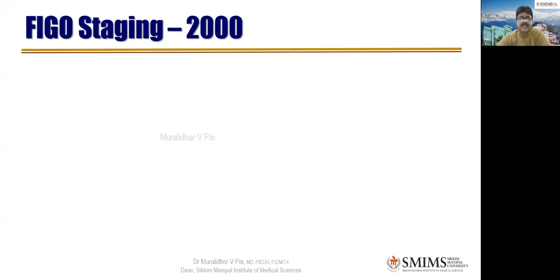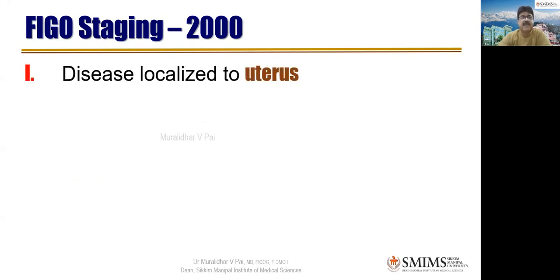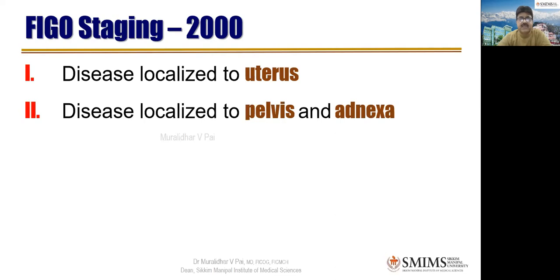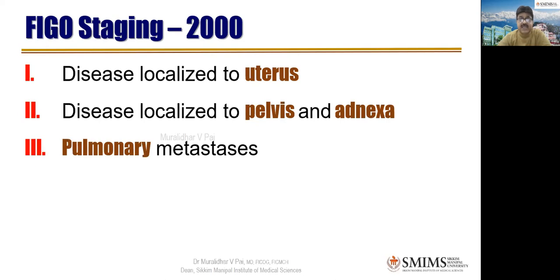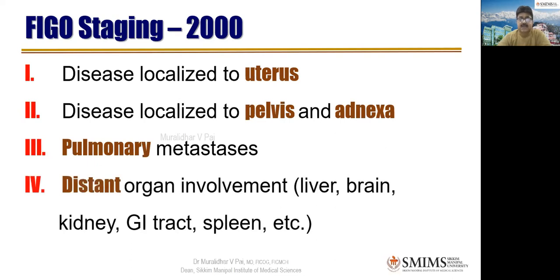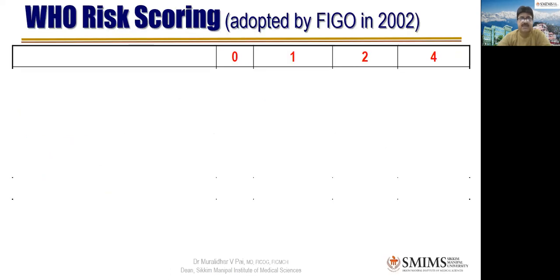FIGO staging follows the common staging formula: Stage I — localized to the uterus; Stage II — in and around, i.e., pelvis and adnexa; Stage III — pulmonary metastasis (not considered very serious, hence Stage III even though far from uterus); Stage IV — distant metastasis, i.e., liver, brain, kidney, GI tract, and spleen. Simple staging, but the scoring system is more elaborate.